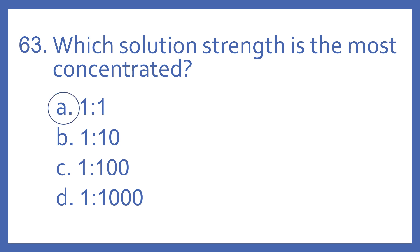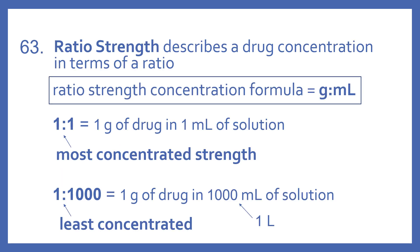The answer is A. A 1 to 1 solution would be the most concentrated. Ratio strength describes a drug concentration in terms of a ratio, with the formula grams to milliliters. So 1 to 1 means there is 1 gram of drug in 1 milliliter of solution — the most concentrated strength. By comparison, 1 to 1,000 means there is 1 gram of drug in 1,000 milliliters, which is 1 liter of solution — much less drug per amount of liquid.